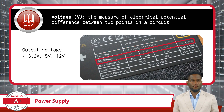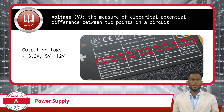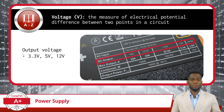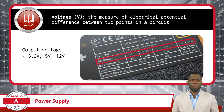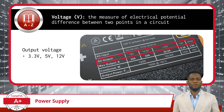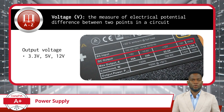Within the computer, various components require specific voltages to operate effectively. For instance, the motherboard, CPU, graphics card, and storage drives each require different levels of voltage to function optimally. Common output voltages provided by the PSU include 3.3 volts, 5 volts, and 12 volts. It is important to note that these voltages are in the form of direct current.